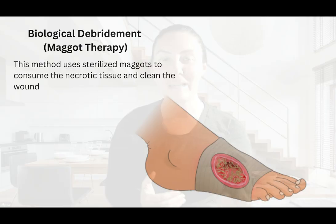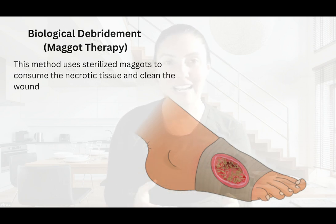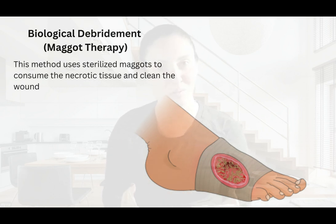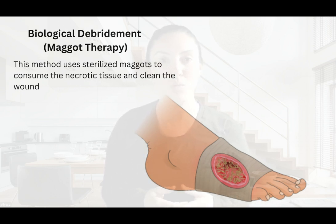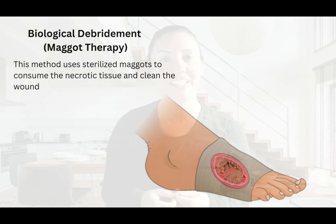Finally, we have biological debridement, or maggot therapy. Yep, you heard that right — maggots. We use sterilized maggots to consume the necrotic tissue and clean the wound. It may sound a little gross, but it's actually a very effective way to promote healing, particularly for hard-to-heal wounds like diabetic ulcers. Maggot therapy is particularly helpful in wounds that have a lot of necrotic tissue and need constant cleaning.